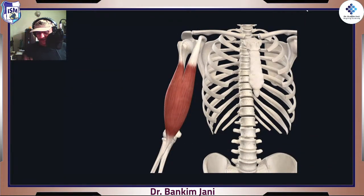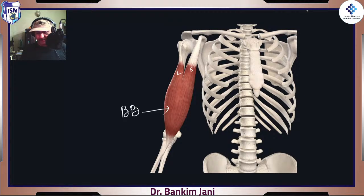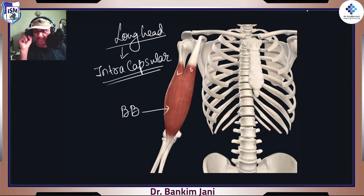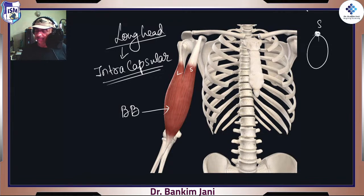You know this muscle very well — this is biceps: long head and short head. Short head is there; long head is there. This long head is entirely intracapsular and will land on the supraglenoid tubercle. Who will land on the infraglenoid tubercle? If supraglenoid is for the long head of biceps, the cousin of biceps will land on the infraglenoid — that is the long head of triceps.